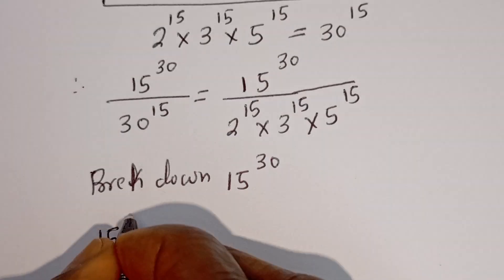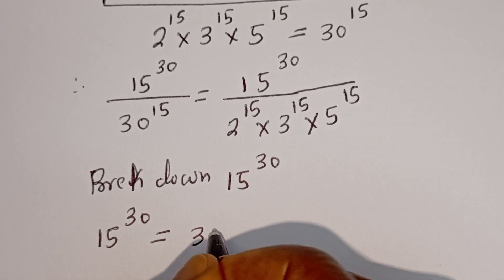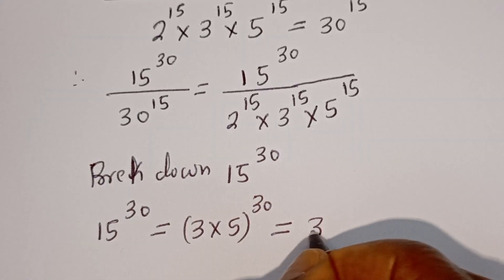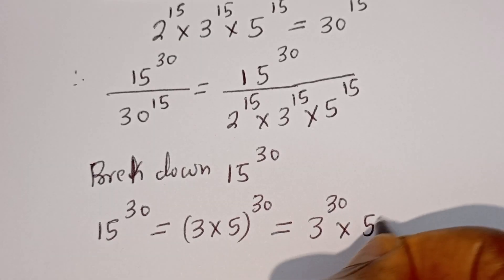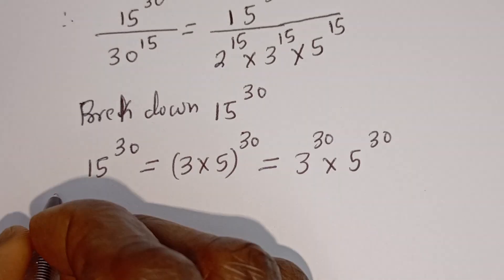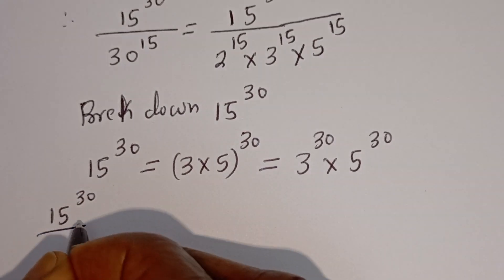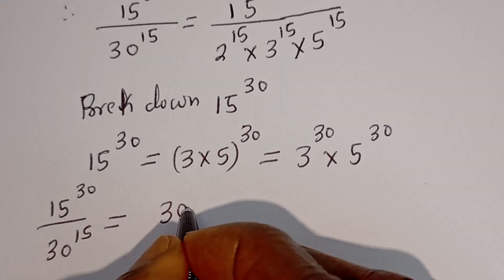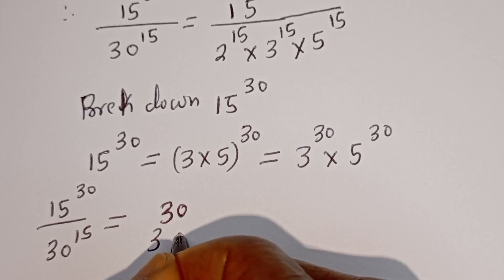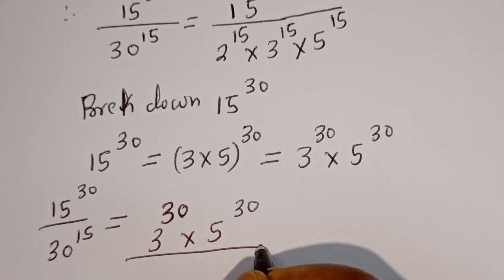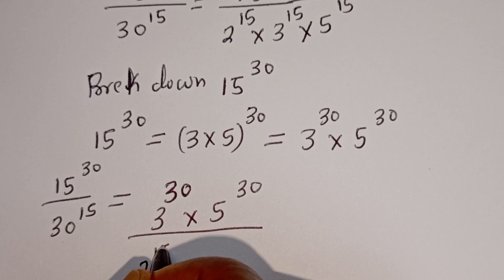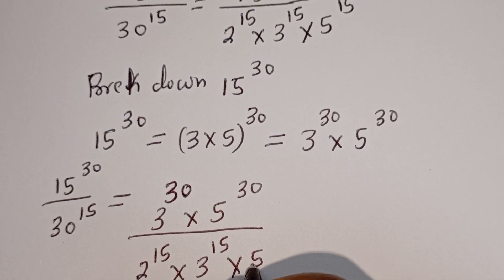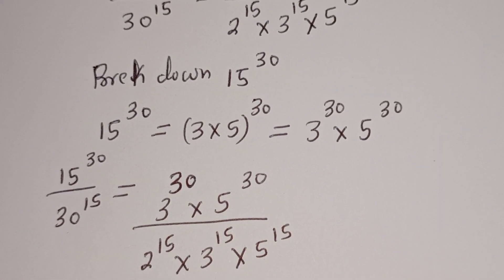Now let's break down 15 to the power of 30. 15 to the power of 30 is equal to 3 multiplied by 5, all to the power of 30, which is equal to 3 to the power of 30 multiplied by 5 to the power of 30. So 15 to the power of 30 divided by 30 to the power of 15 is equal to 3 to the power of 30 multiplied by 5 to the power of 30, divided by 2 to the power of 15 multiplied by 3 to the power of 15 multiplied by 5 to the power of 15.